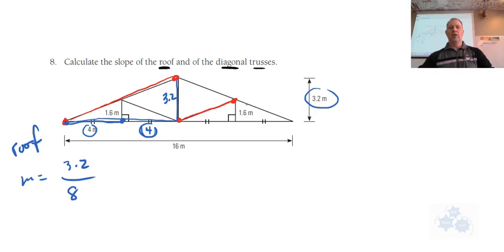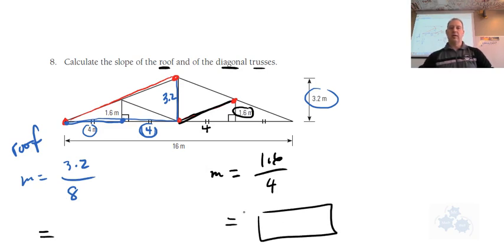And then what you want to do is you want to calculate the slope of this truss right here. And it has a rise of 1.6 and then of course we know this is a run of 4. So you want to do 1.6 divided by 4. And you want to see what those two values are.